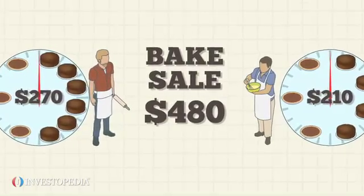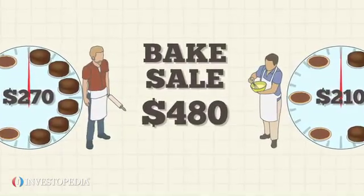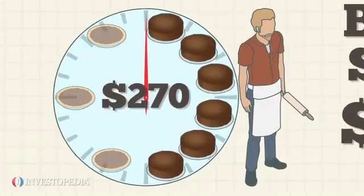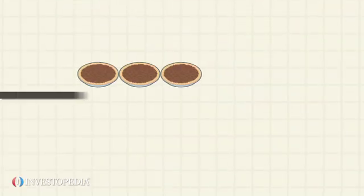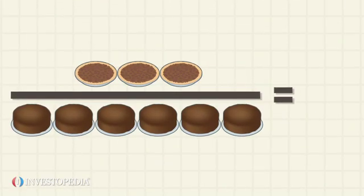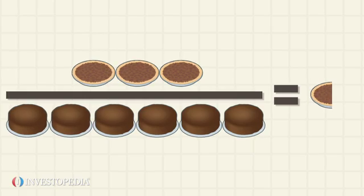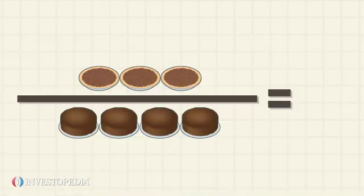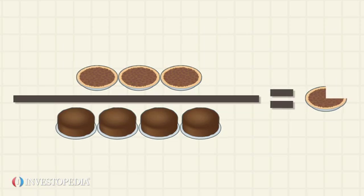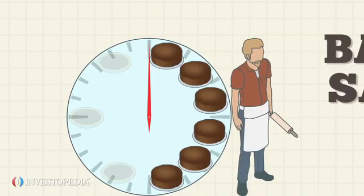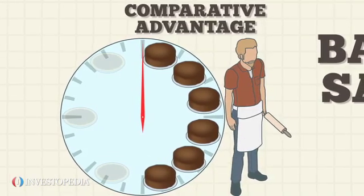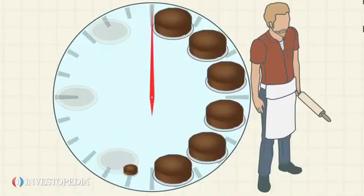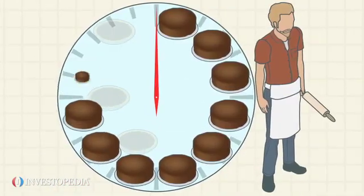But what if they both focus on baking the goodies in which they have a comparative advantage? If David moves his resources into baking chocolate cakes only, the opportunity cost of each extra cake per day will be half a pecan pie. The same decision for Lawrence is an opportunity cost of three-quarters of a pie. With fewer pies to sacrifice, David has a comparative advantage over Lawrence in cakes, so he should make only cakes for the fundraiser event.